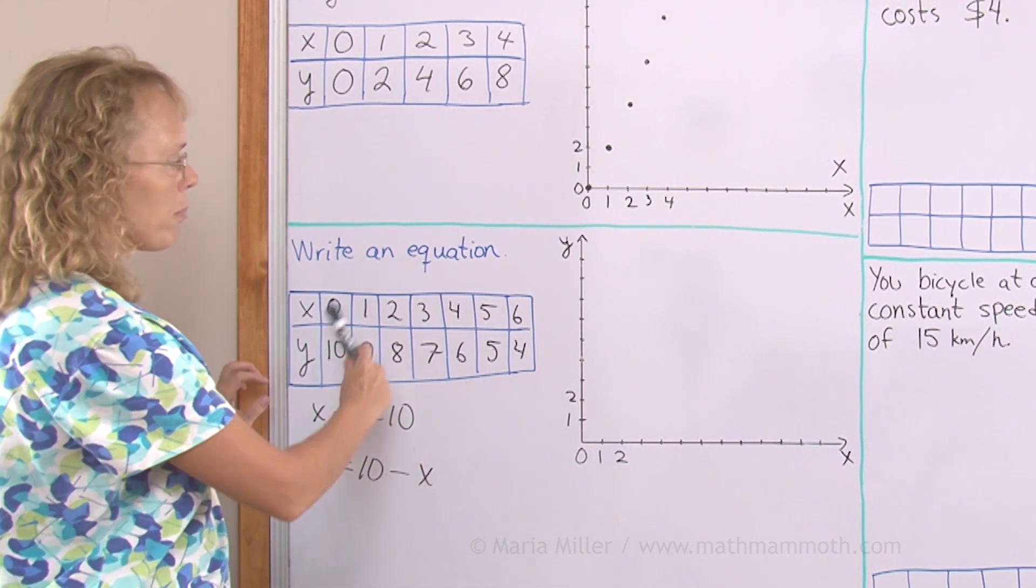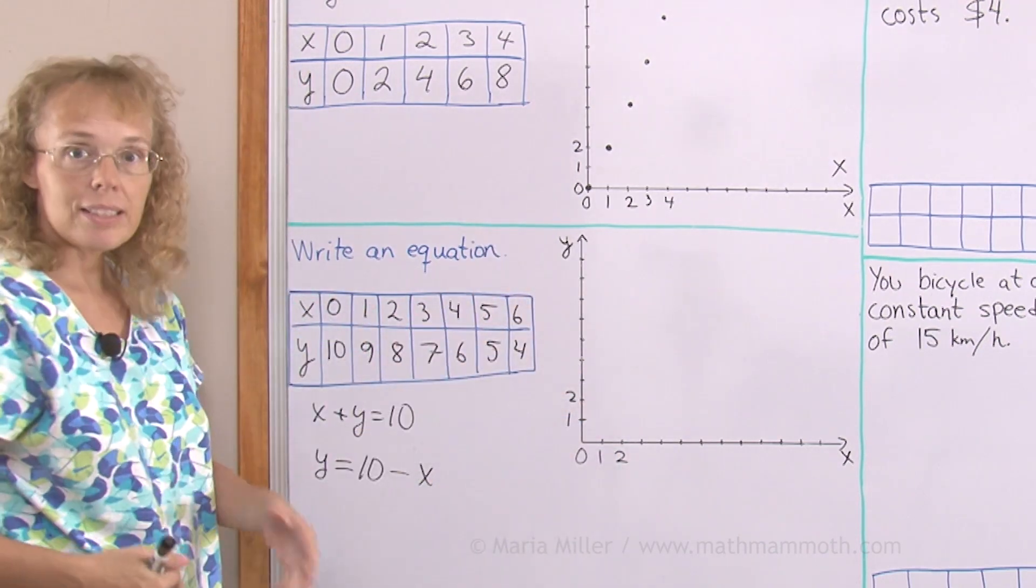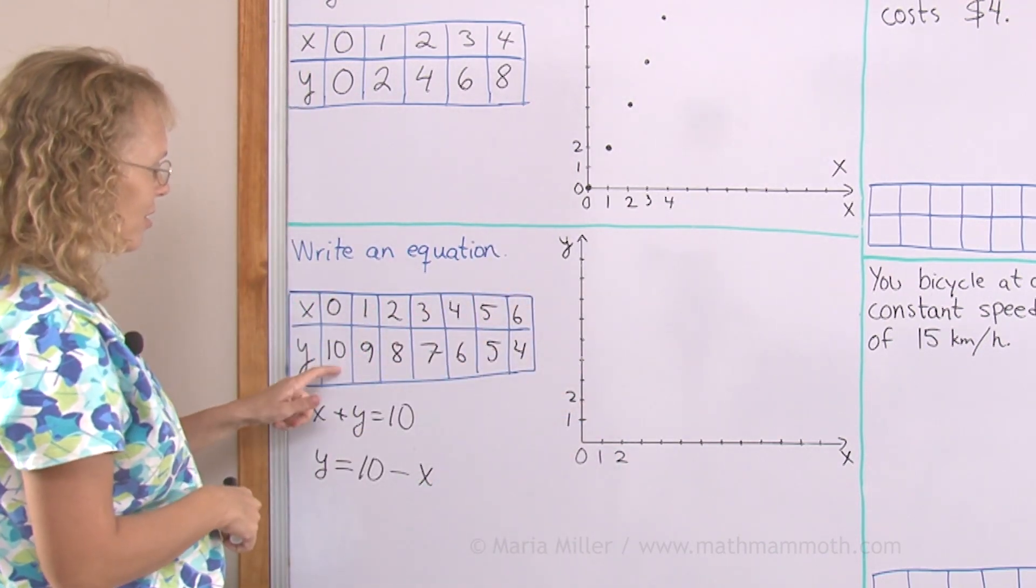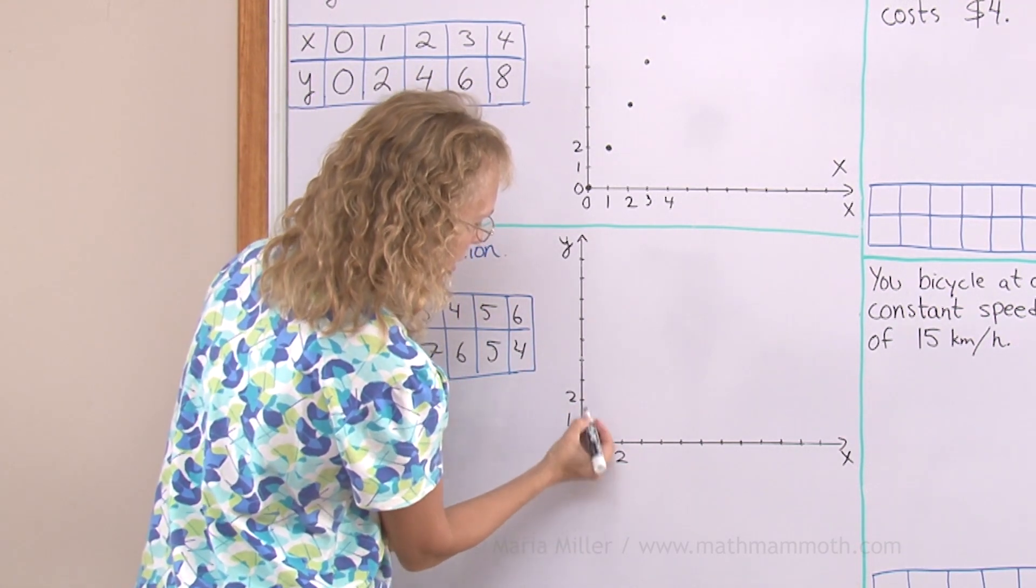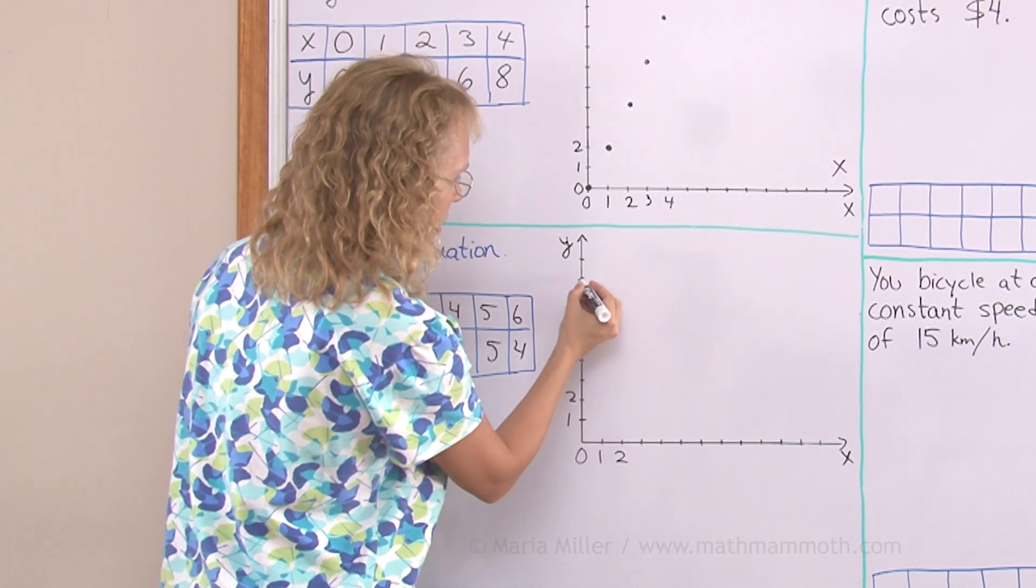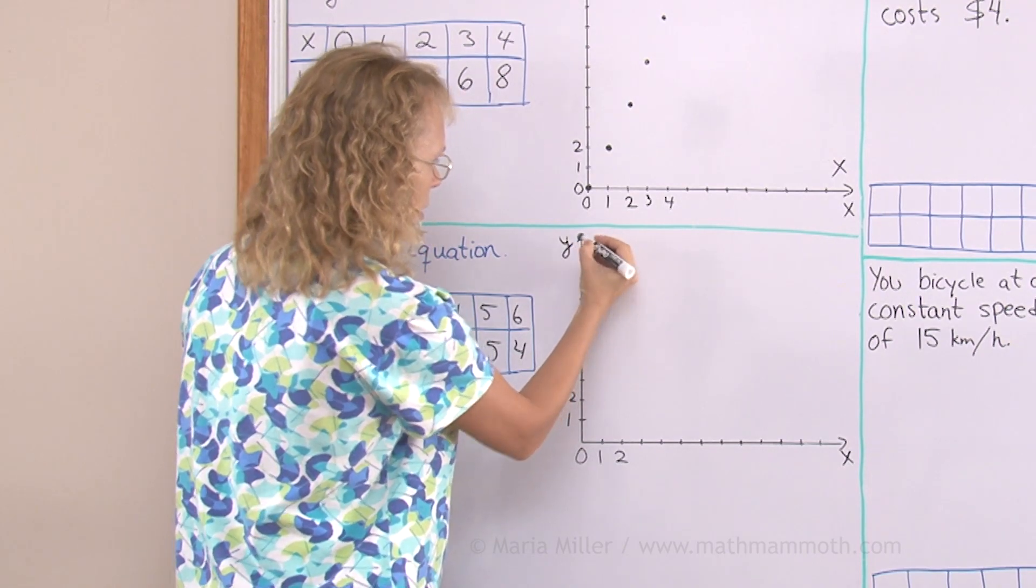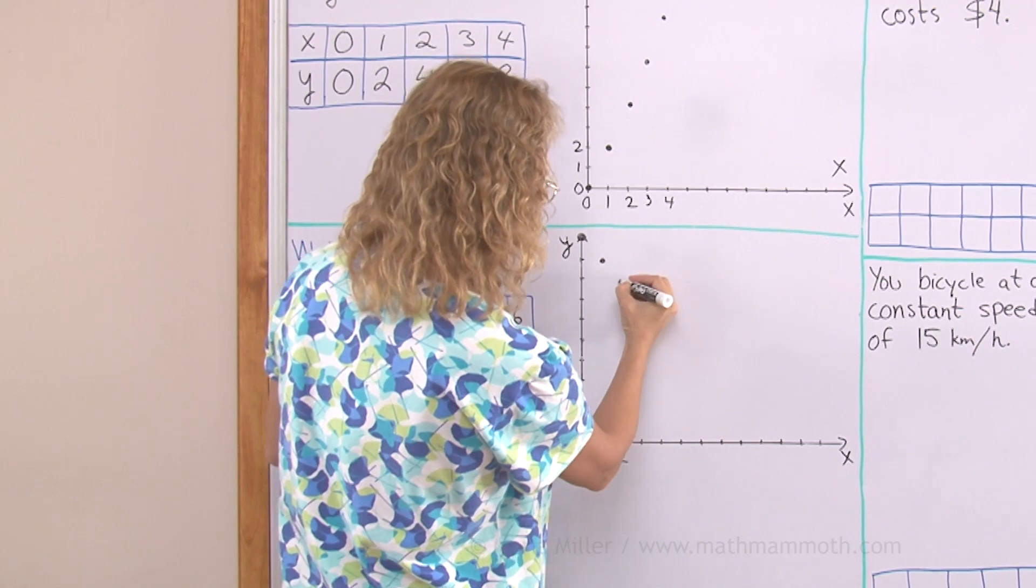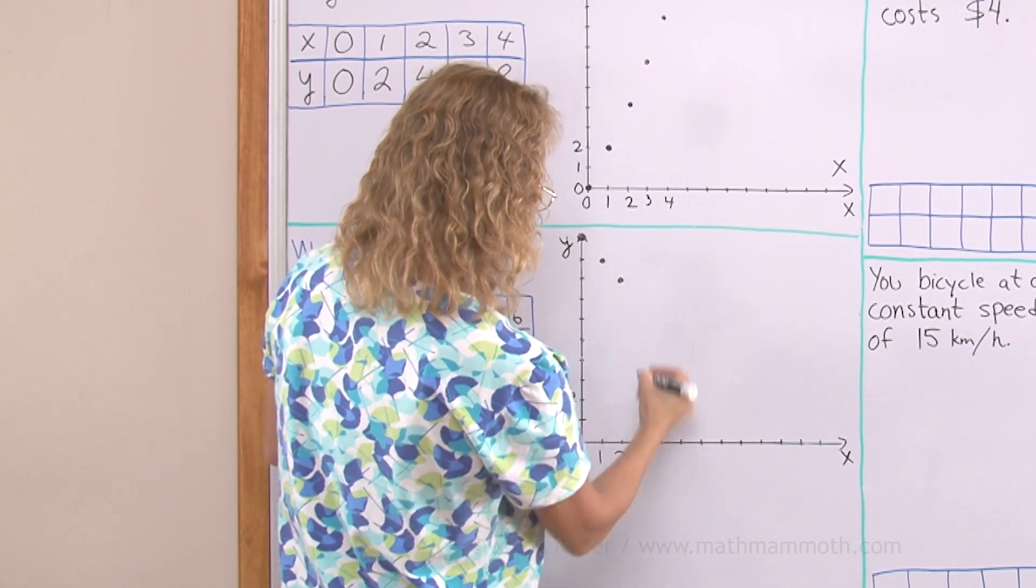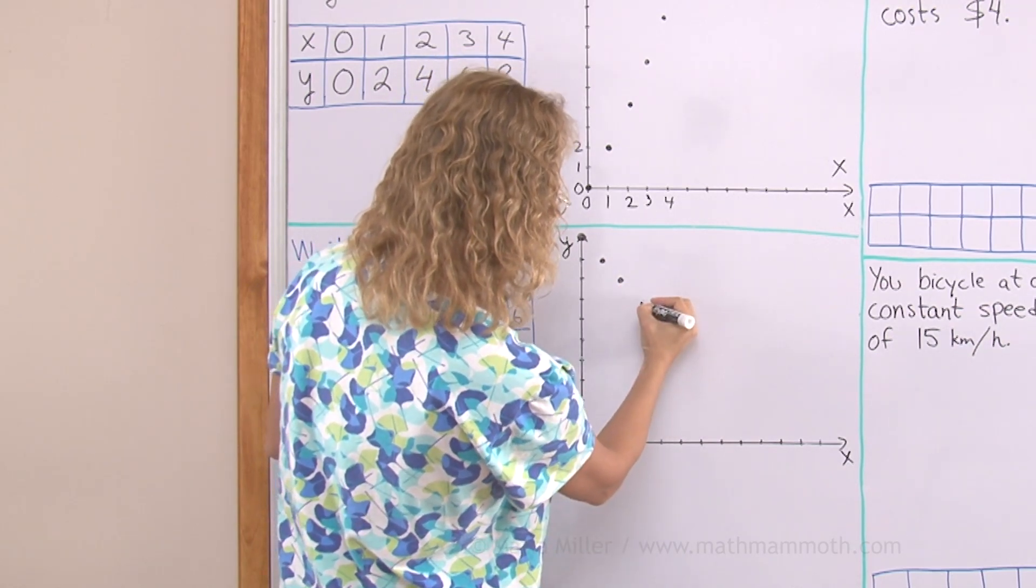Now let's plot these number pairs over here and see what kind of pattern we get, if any. 0, 10. x is 0 here and y is 10. 1, 9, 2, 8. See it's going like a downhill run.